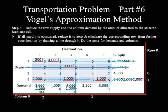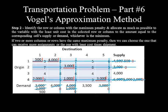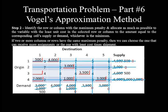Deducting the allocated 2,000 reduces origin 4 supply to 0 and destination 1 demand to 500. Row 4 is deleted because its supply is reduced to 0. Now only one undeleted row remains, so we can skip step 1 and directly proceed to step 2. The two undeleted costs in row 3 are equal at 4, so we choose the cell that can receive the greater amount — the 4 in column 4. Demand and supply corresponding to this cell are 3,500 and 4,000 respectively, so 3,500 is allocated. This reduces the demand to 0 and supply to 500. Column 4 is eliminated. The only active cell remaining is at the intersection of row 3 and column 1, with unfulfilled demand equal to unconsumed supply of 500, so 500 is allocated.